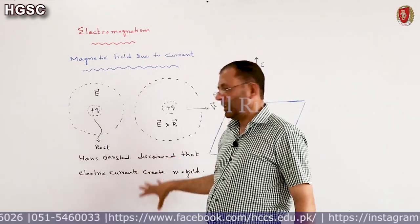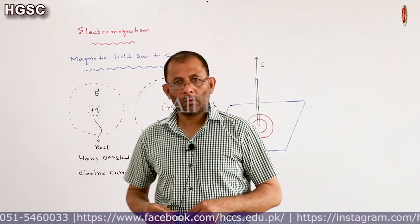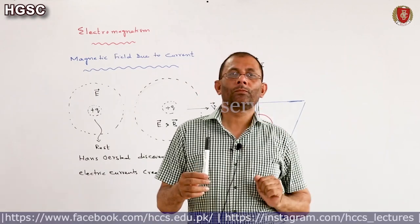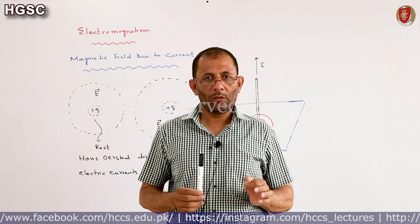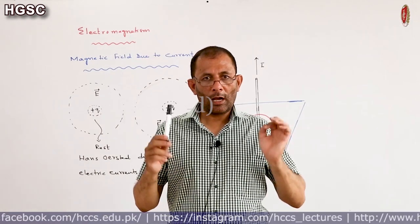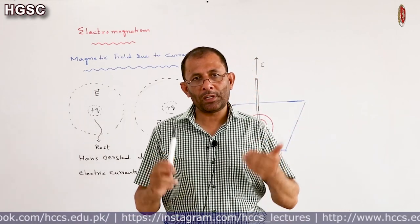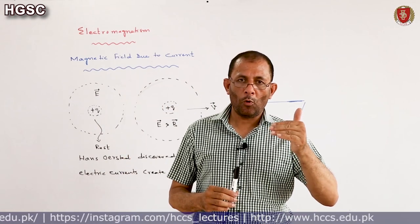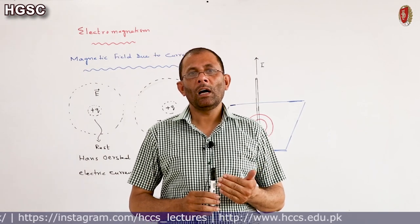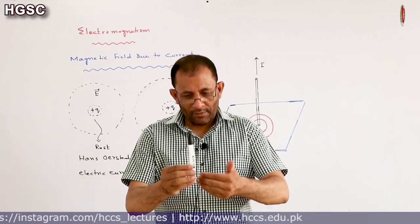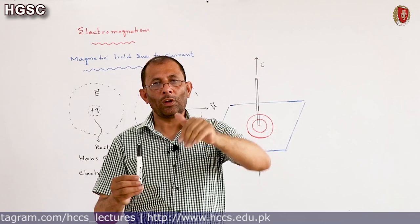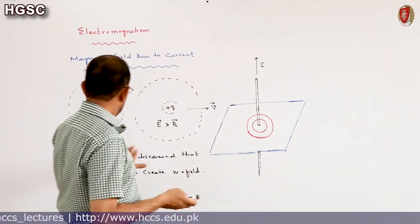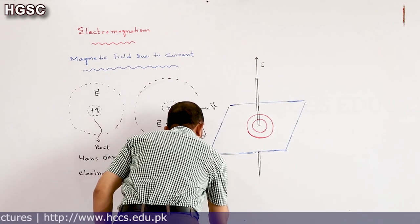Oersted discovered this when current passes through a straight conductor, magnetic field is produced around it. The presence of magnetic field can be checked by a magnetic needle, which we call a compass. A compass is a freely suspended bar magnet enclosed in a casing. Whenever a compass is placed at any point, this freely suspended magnet aligns itself in the direction of the external magnetic field. So whenever current passes through a wire, the magnetic field produced around it can be verified with the help of a compass.